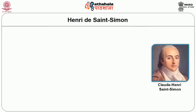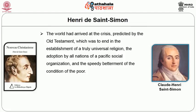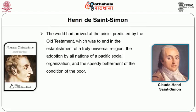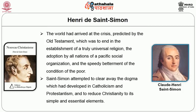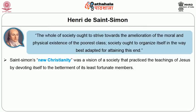Saint-Simon's vision influenced French and European society throughout the 19th century. His major work, Nouveau Christianisme, announced that the world had arrived at the crisis predicted by the Old Testament, which was to end in the establishment of a truly universal religion, the adoption by all nations of a pacific social organization, and the speedy betterment of the conditions of the poor. Saint-Simon attempted to clear away the dogma which had developed in Catholicism and Protestantism and to reduce Christianity to its simple and essential elements. He proposed that the whole of society ought to strive towards amelioration of the moral and physical existence of the poorest classes.